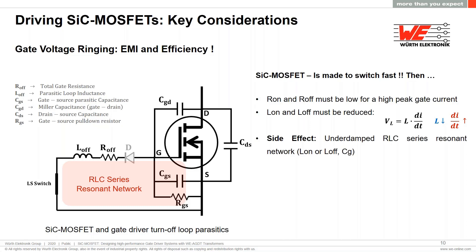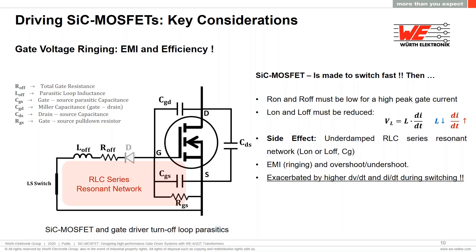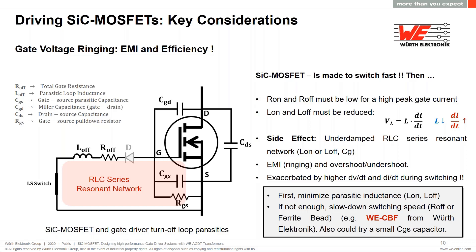This ringing not only generates more EMI noise but also reduces efficiency as switching losses increase. Additionally, the maximum and minimum dynamic gate-source voltage ratings of the silicon carbide MOSFET could be exceeded by the overshoot and undershoot — and this is exacerbated by the faster switching speeds of silicon carbide devices. The first remedy is to reduce parasitic inductance as much as possible. If still insufficient, we can slow switching speed by increasing the gate resistor value, using a small ferrite bead such as the CBF series from Würth Electronics, or adding a small external gate-source capacitor.